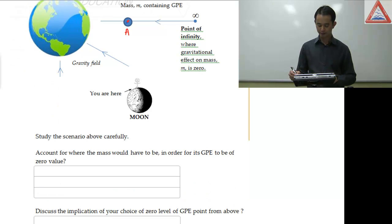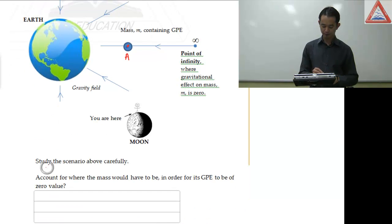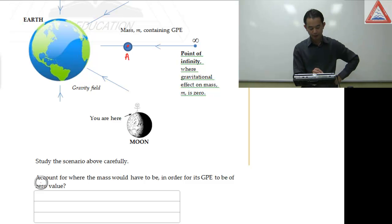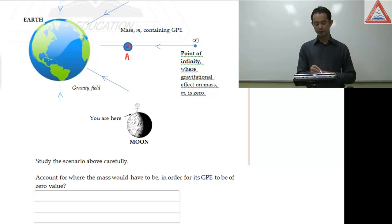Alright. Study this carefully. Now I want you to think about this. I want you to account for where the mass would have to be in order for its GPE to be of zero value. Where do you think the mass will have to be along this line here? Between the earth and the point of infinity, where would this object M have to be in order for its GPE value to be zero?